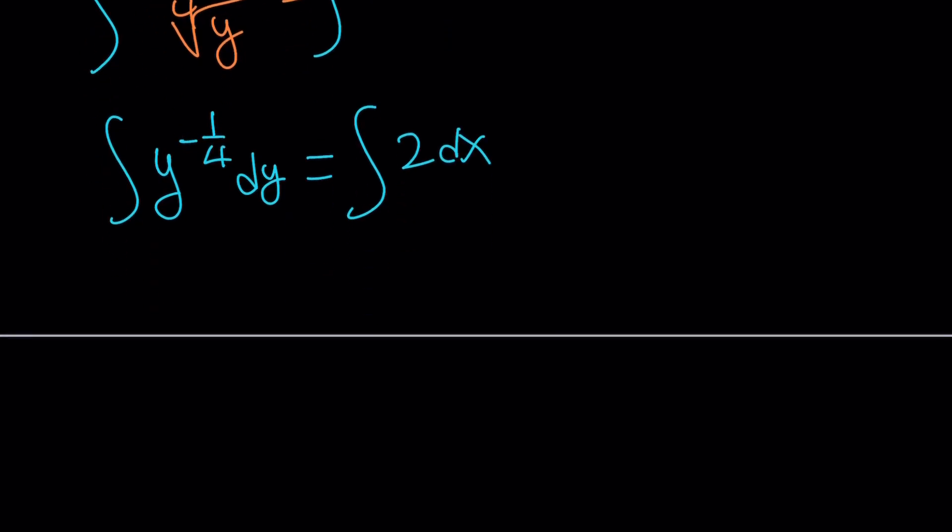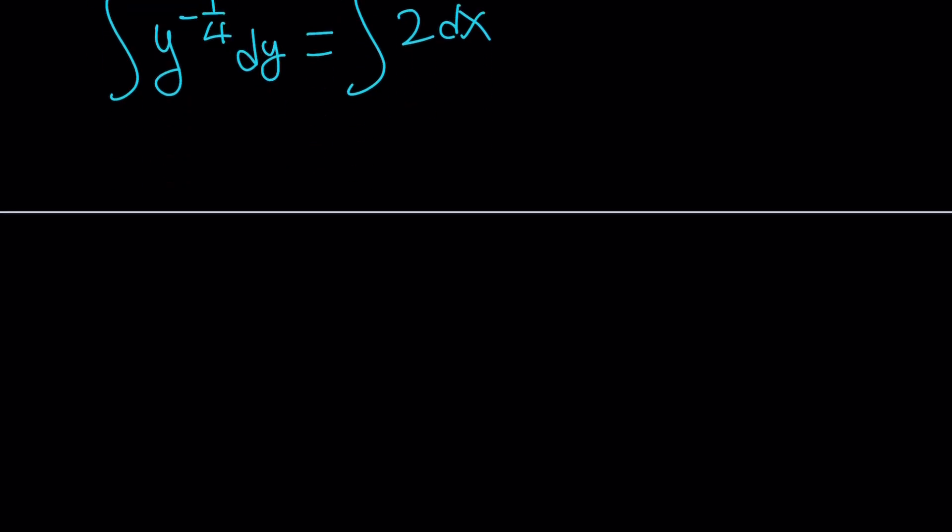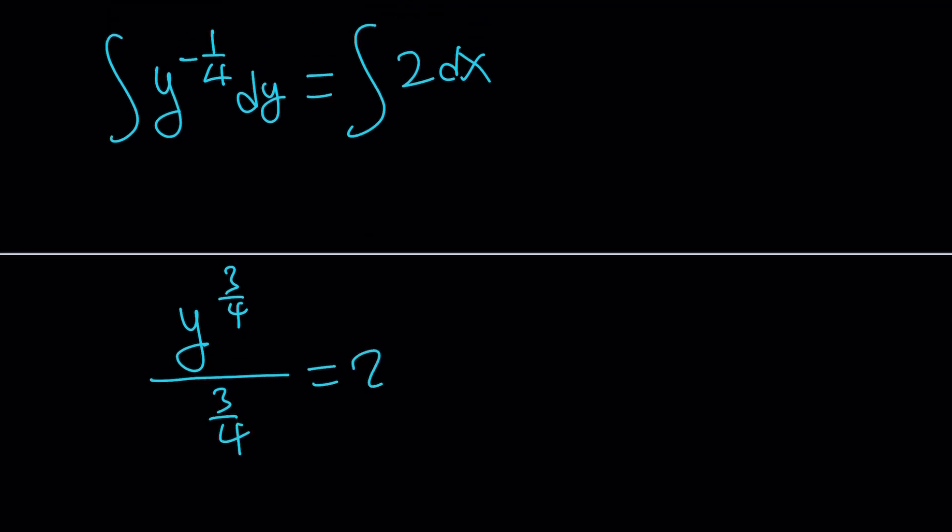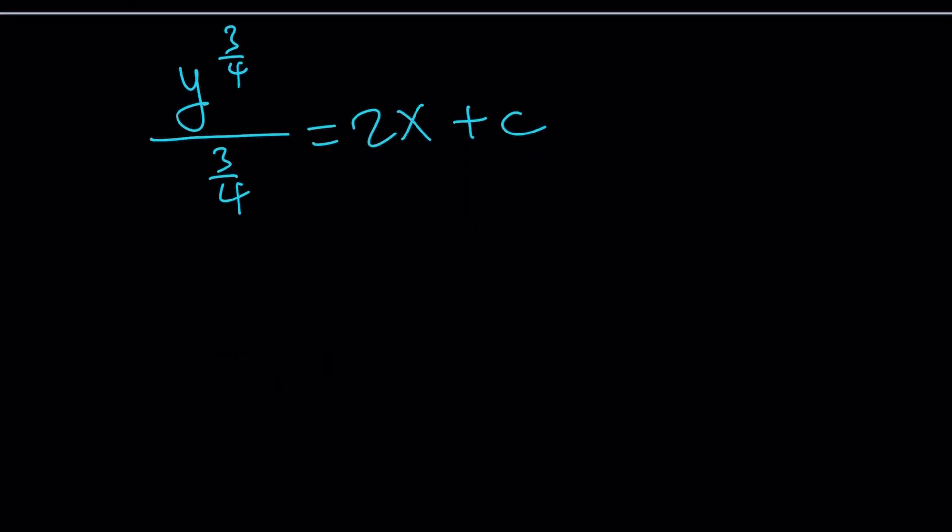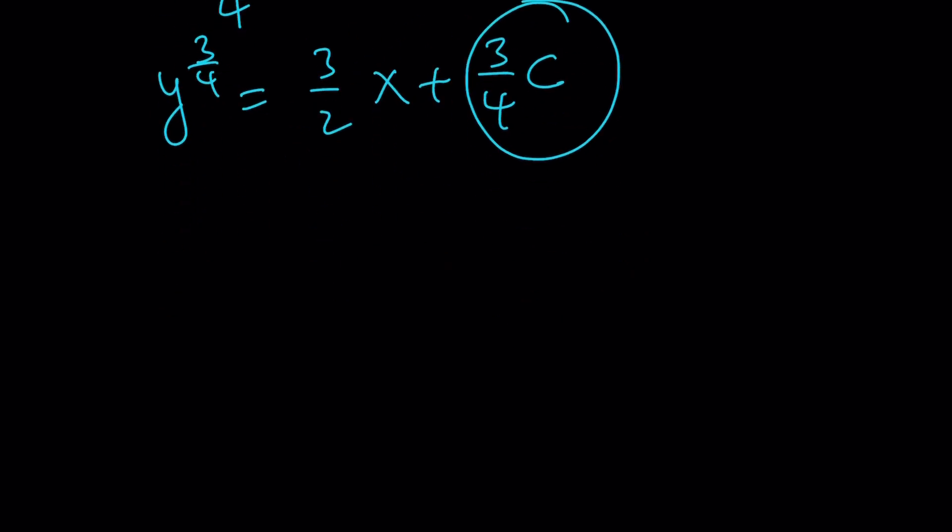Let's go ahead and integrate it. This is going to give you, add one to the power. So, that's going to be y to the power of three fourths and divide by that. Remember the power rule of integration. And if you integrate two, you get two x plus a constant. Let's call that c.